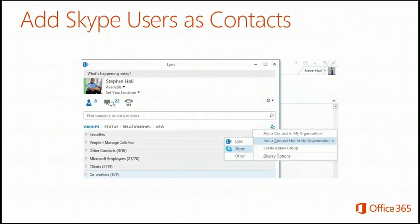Adding Skype users as a contact — and I'll actually do this in a moment. You go to Add a New Contact, then Add a Contact Outside of Our Organization and select Skype. Assuming you've enabled that, and we'll show how to enable that as we go through the deck.